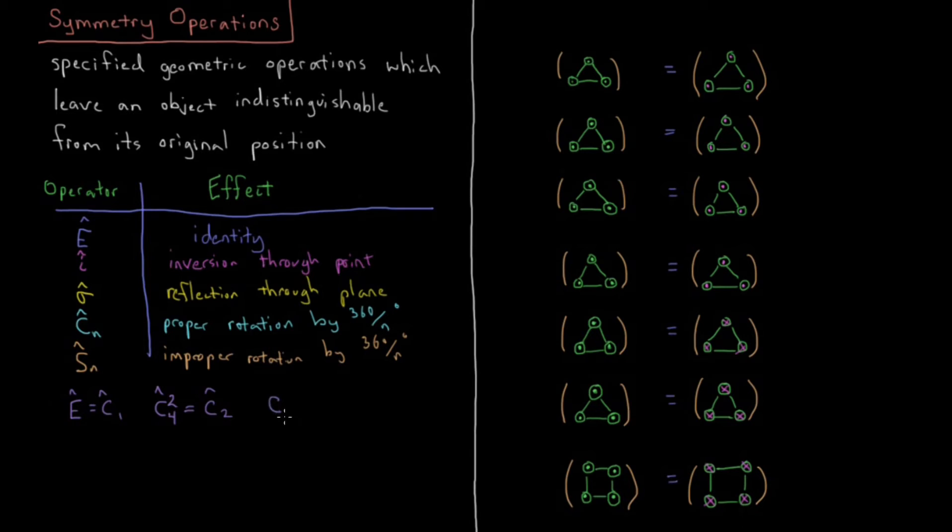And then what about in general, if I take CN rotation by 360 over N degrees, I take that to the Nth power. So I do that N times. So if I rotate by 360 over N times N, that's going to be 360. So that's going to be C1, which is also identity. So for any rotation, if I rotate enough times, I get back to the original, I get back to my identity.